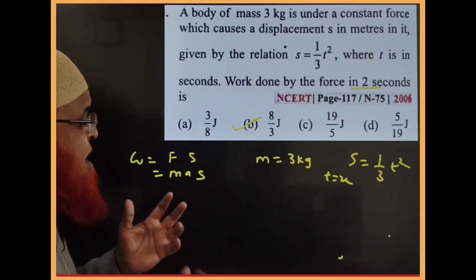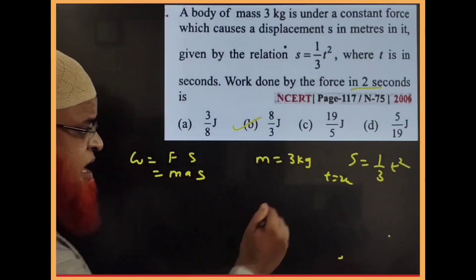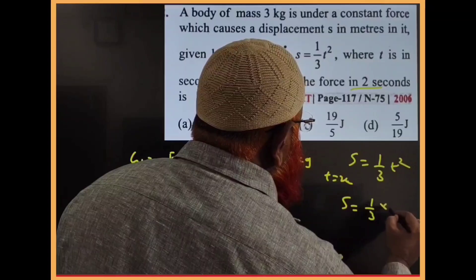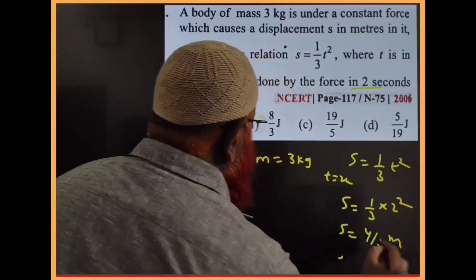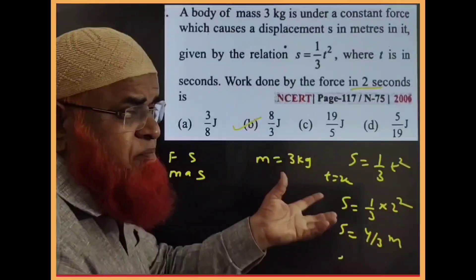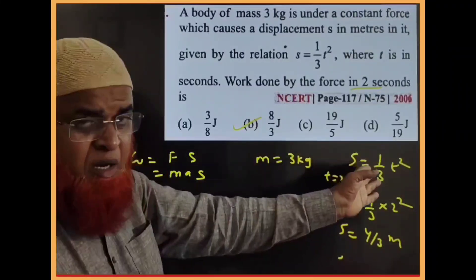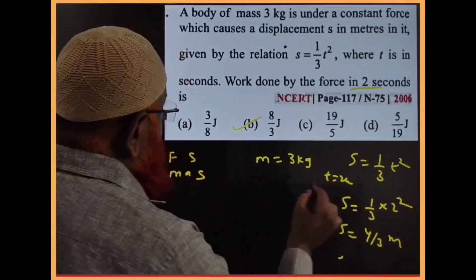You can substitute the value of t and find displacement, which is 4/3 meters. For acceleration, you would normally differentiate twice, but without using differentiation I'll do it this way.